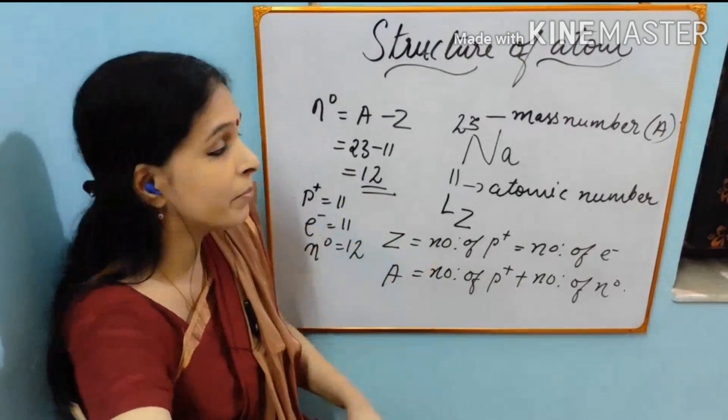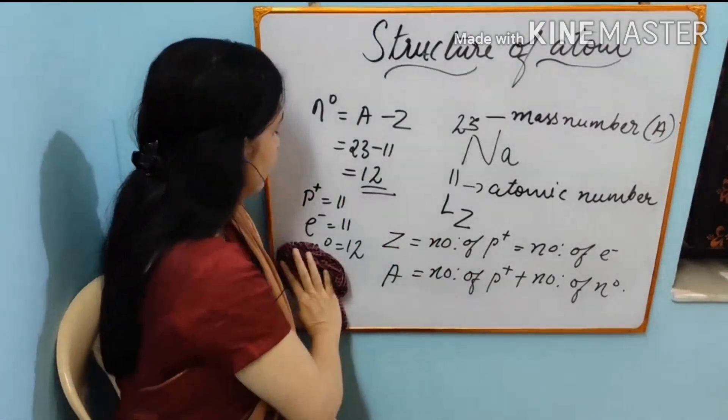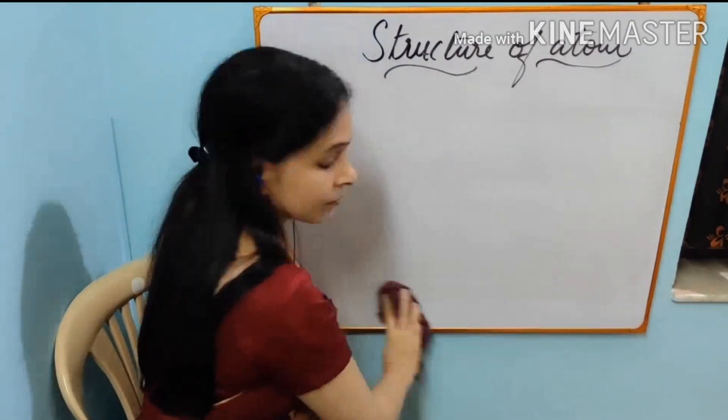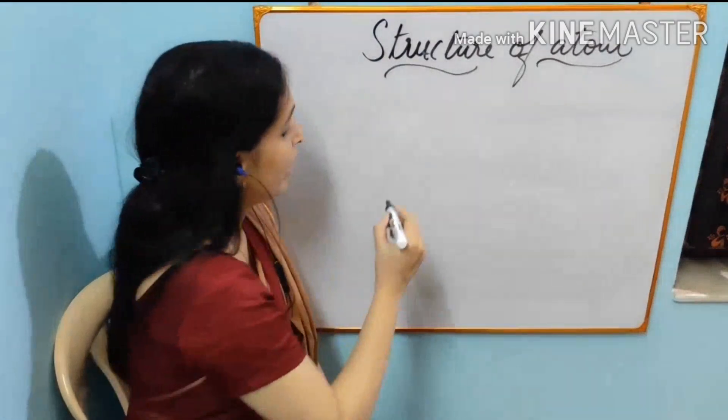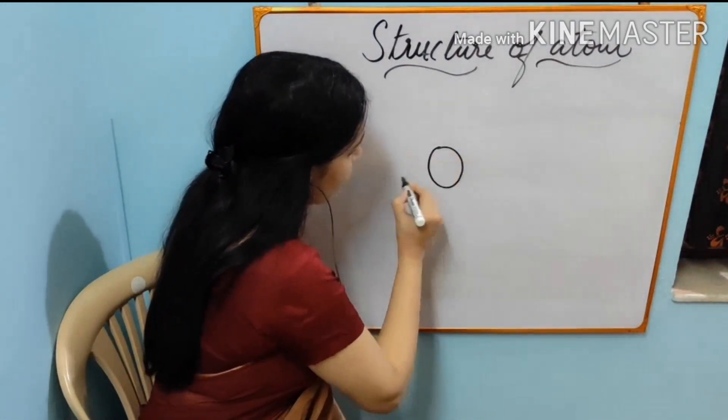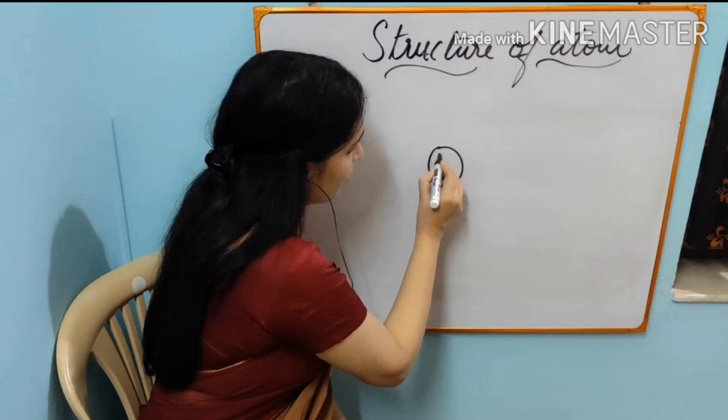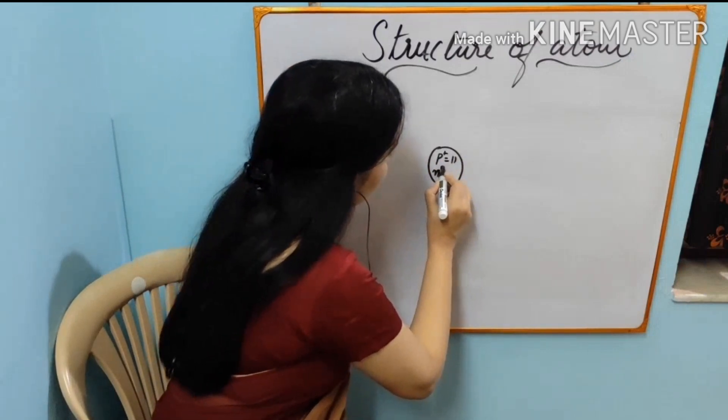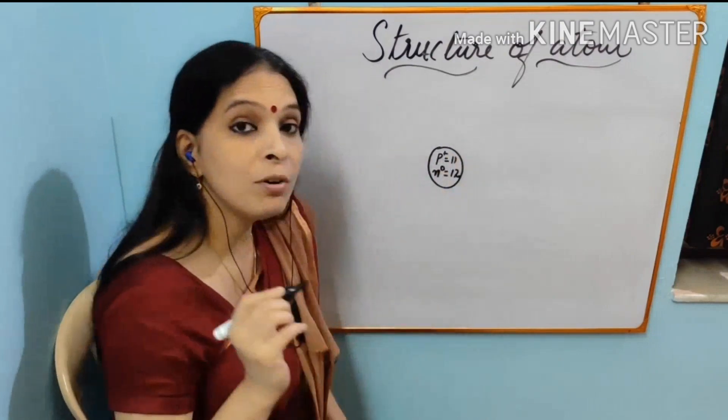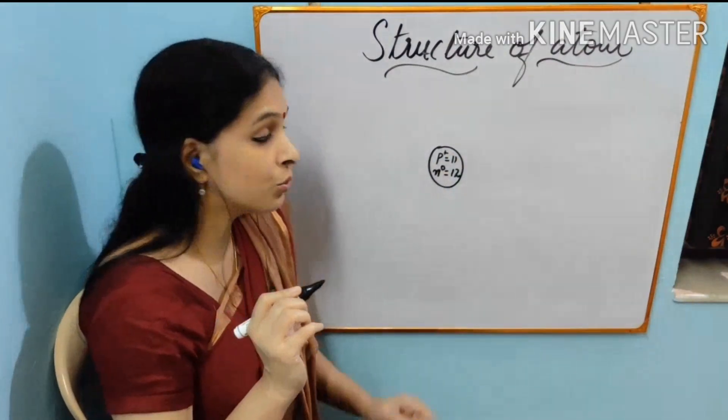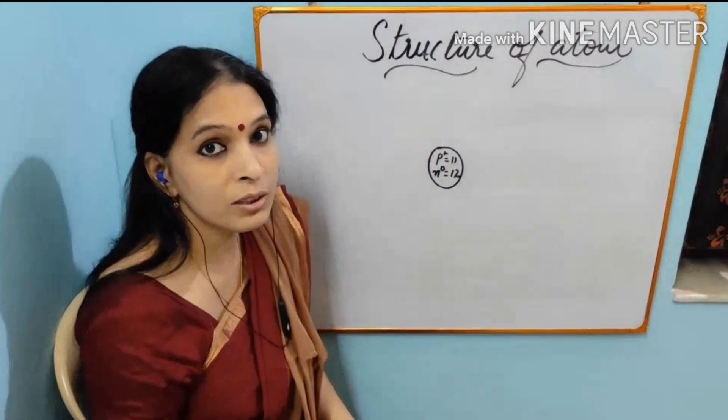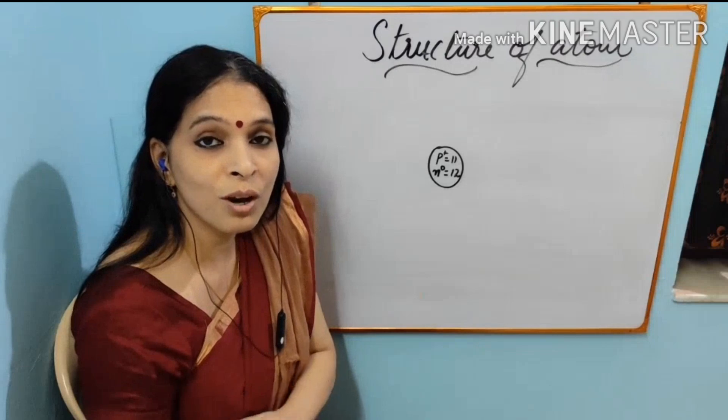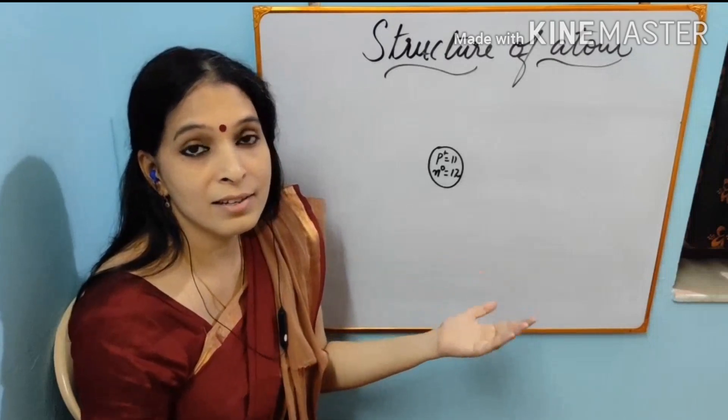Now I can draw sodium atom and show. First time you draw the nucleus. I told you the number of protons equal to 11 and number of neutron equal to 12 and number of electrons equal to 11 which is equal to the number of protons. Now how they are arranged? It is very important to know how electrons are arranged inside an atom.